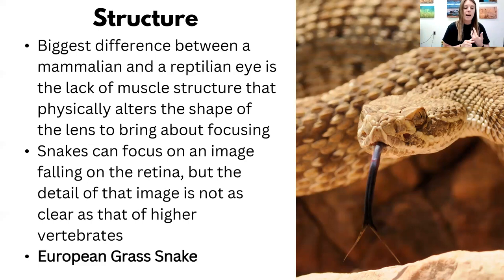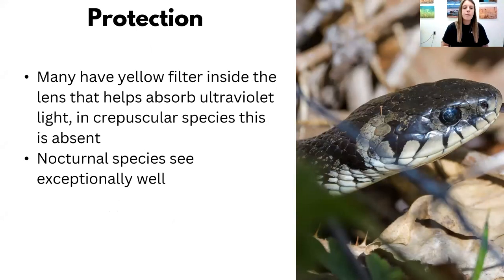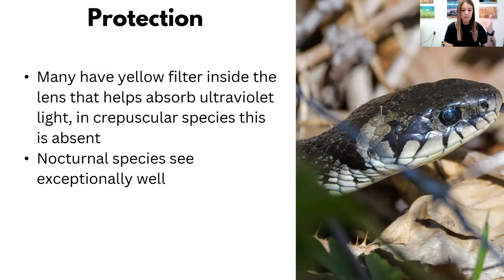The European grass snake has only cones sensitive to blue, green, and red colors, but lacks the oil droplet in the eye that helps photoreceptors filter light, which restricts its color range. Many snake and reptile species have a yellow filter inside the lens that helps absorb ultraviolet light. Crepuscular species don't have this at all. Having the presence of a vertical pupil and a clear lens helps the retina — these animals have a ton of rods for low-light situations, and the pupil basically allows proportional amounts of light to penetrate the eye.